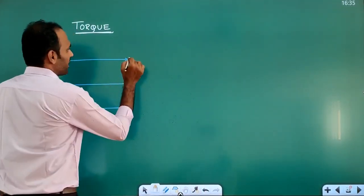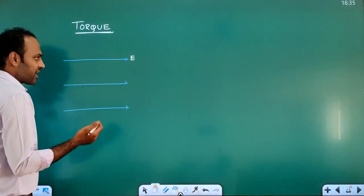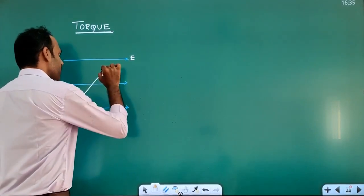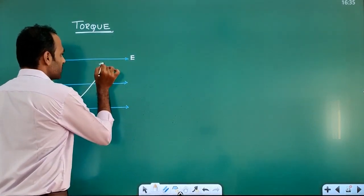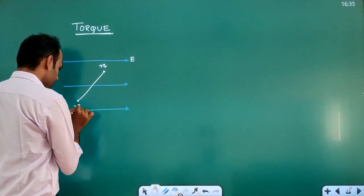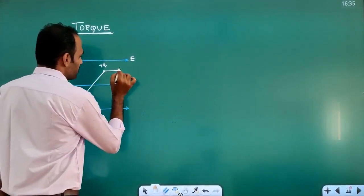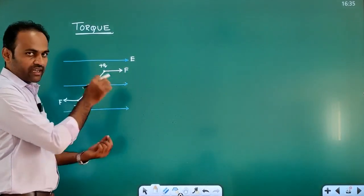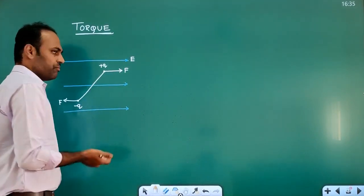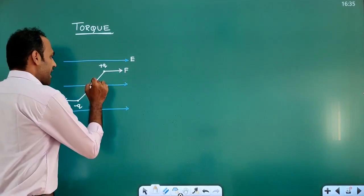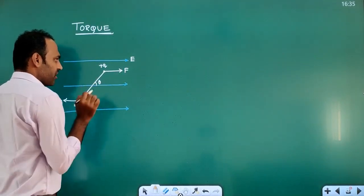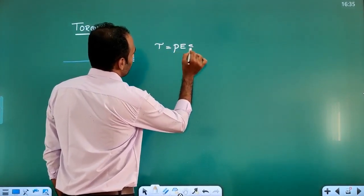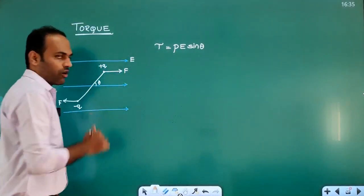Let us take a uniform electric field — the lines are parallel and equidistant. In this uniform electric field, the dipole has plus q on one charge and minus q on the other charge. These two equal and opposite forces cause it to start rotating, which is called torque. The angle of the axis of the dipole with respect to the electric field is theta. So the torque acting on the dipole will be equal to PE sine theta.